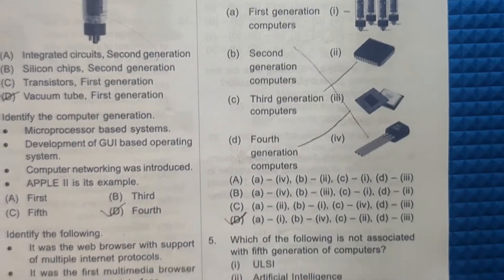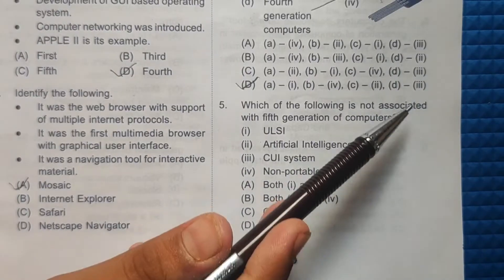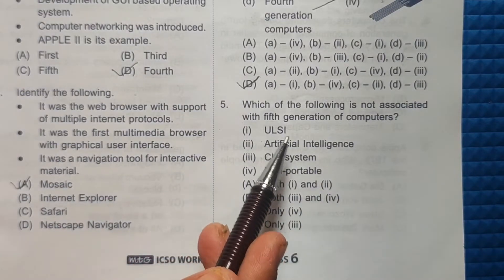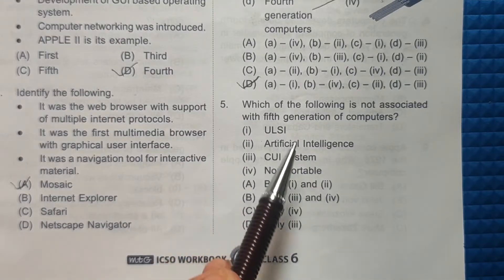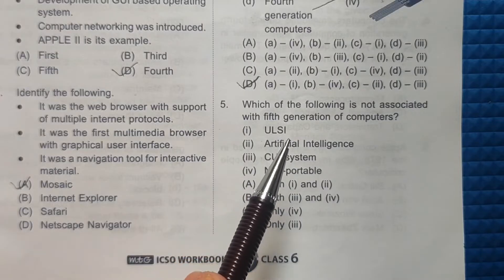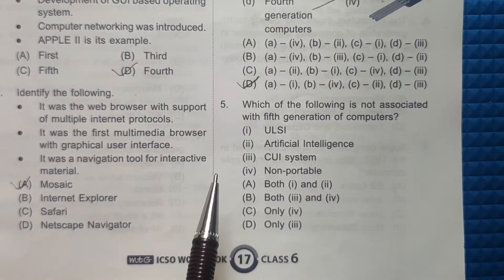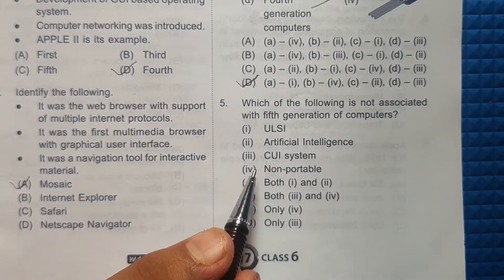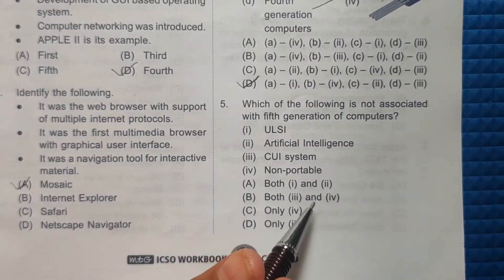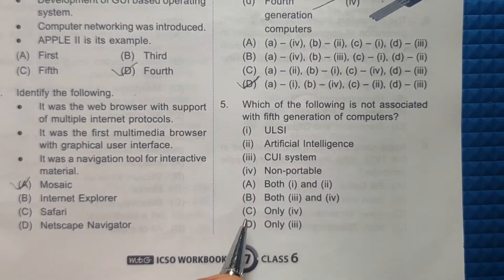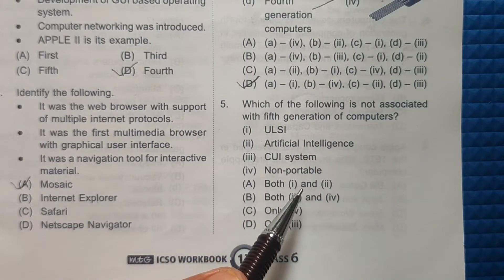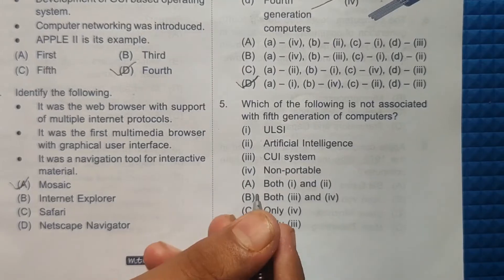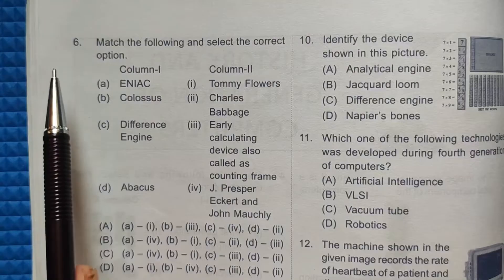Fifth question: which of the following is not associated with fifth generation computers? Options given are: ULSI (Ultra Large Scale Integration), artificial intelligence, and CUI (Character User Interface). Reading through the answer choices — A: both 1 and 2, B: both 3 and 4, C: only 4, D: only 3. Option B's third and fourth items are not examples of fifth generation computers, so the correct answer is option number B.